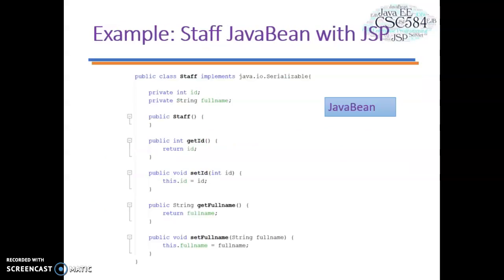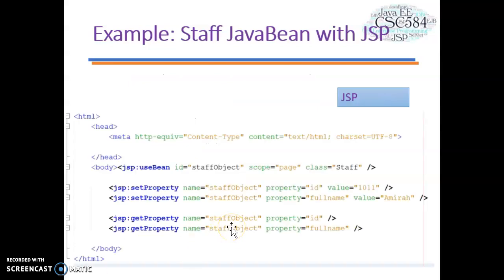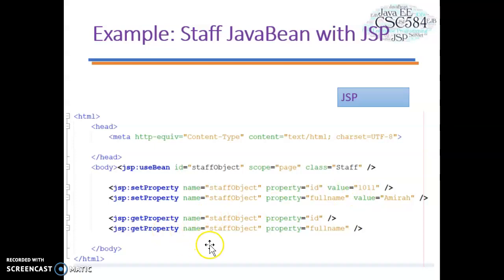Let's look at a full example of a Staff Java Bean with JSP. The Staff class implements java.io.Serializable and has two data members: id and fullName. It has a constructor with no arguments and getter and setter methods for both data members — this is your Java Bean. To use it, you write the JSP tags: the useBean tag sets the ID to the staff object along with scope and class. For setProperty, you set three parameters — the bean ID name, the property, and the value. For getProperty, you set two parameters — the bean object and the property.